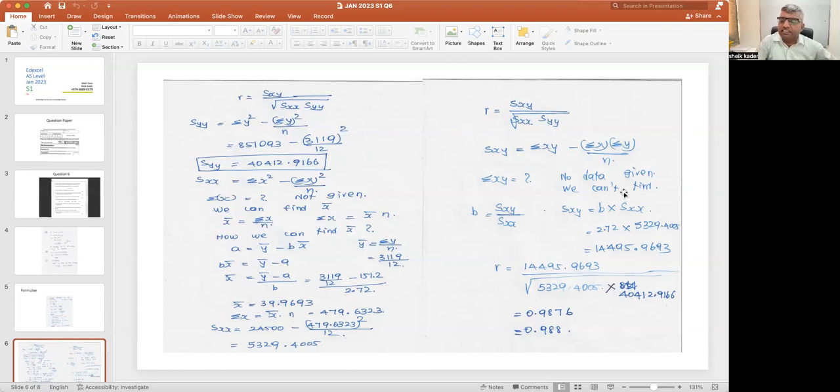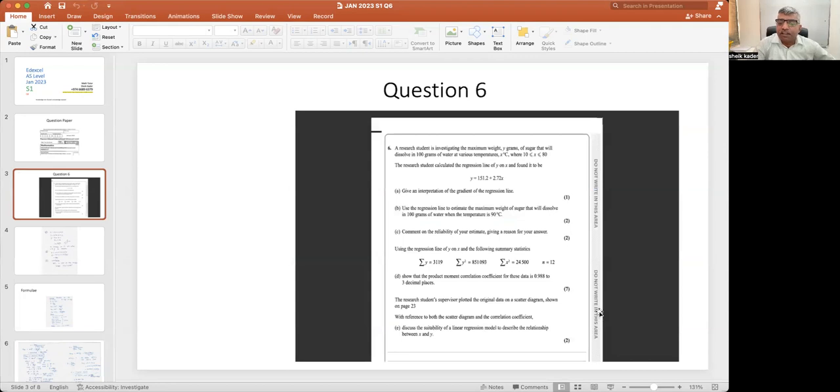Question 6E: They have given one graph in the next page. They are telling, with reference to the scatter diagram and the correlation coefficient, discuss the suitability of the linear regression model to describe the relationship between x and y.